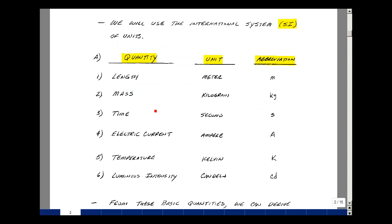Length in our basic unit is meter, abbreviated with a small m. Mass in kilograms, abbreviated kg. Time in seconds, abbreviated with a small s. Electric current in amperes, with a symbol of capital A. Temperature in Kelvin, capital K. And luminous intensity in candela, or CD.